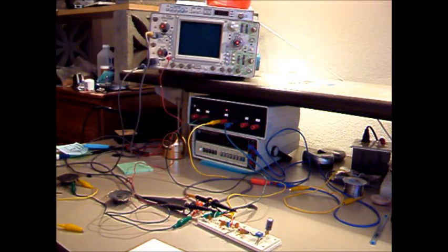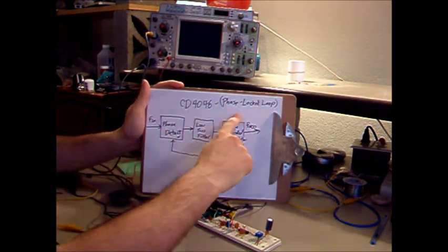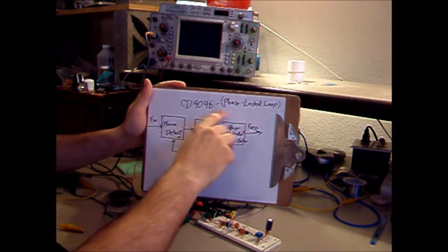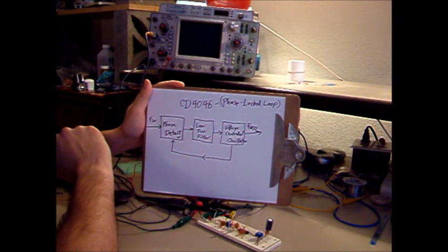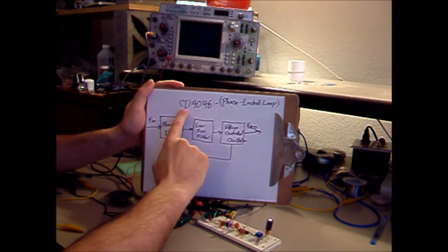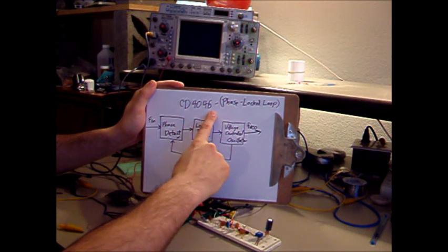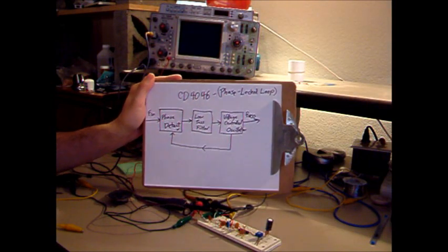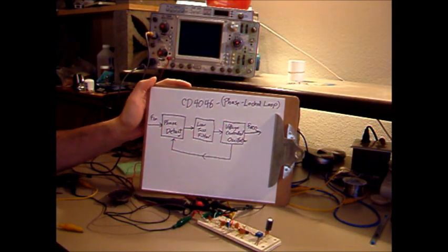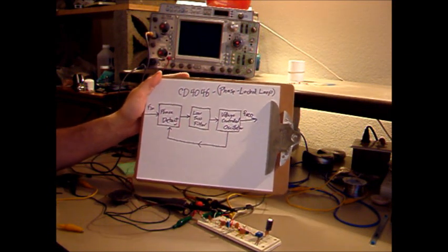Hey, this is Kenneth, and today I'm going to show you a basic introduction to the phase-locked loop. This is one of the basic circuits used in advanced digital and analog design, and I'm going to be using, for a specific example, the CD4046, which is part of the original 4000 CMOS series — a real standard jellybean set of logic, much like the 7400 series, which most people will often see in many projects.